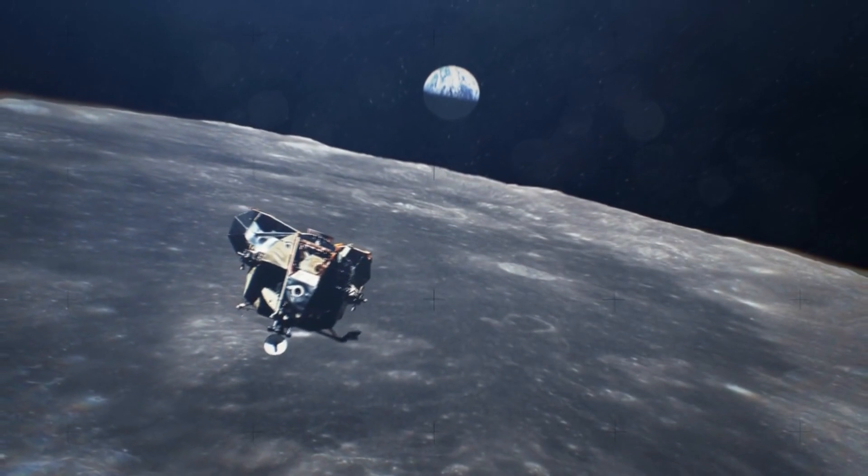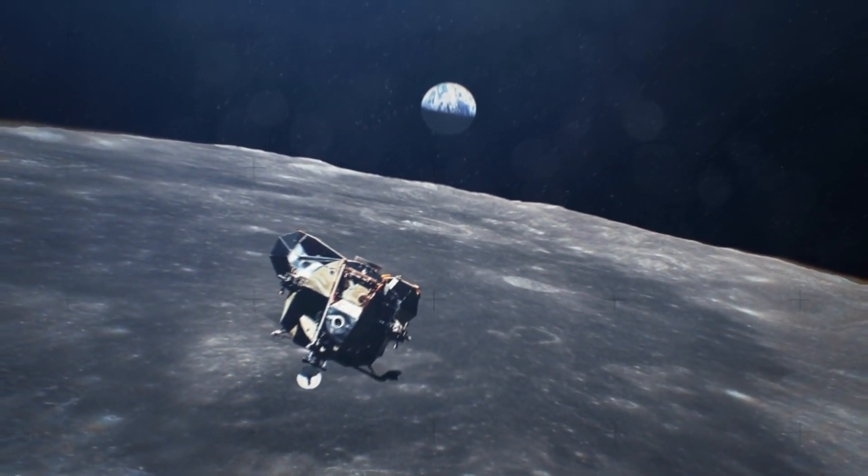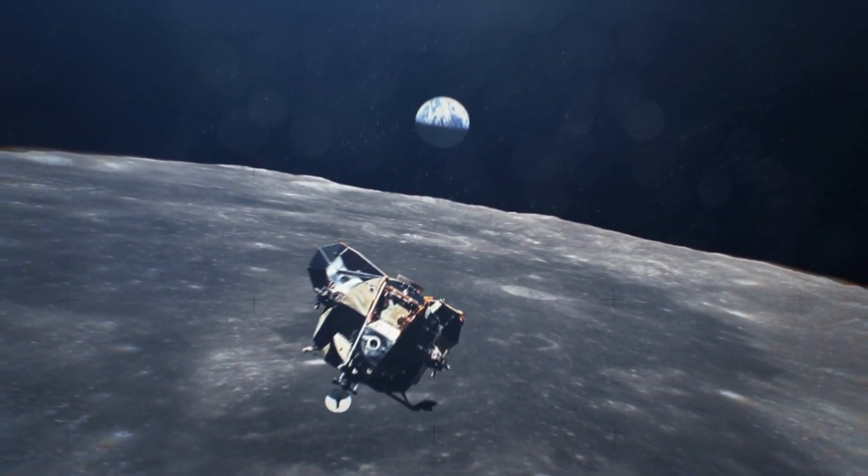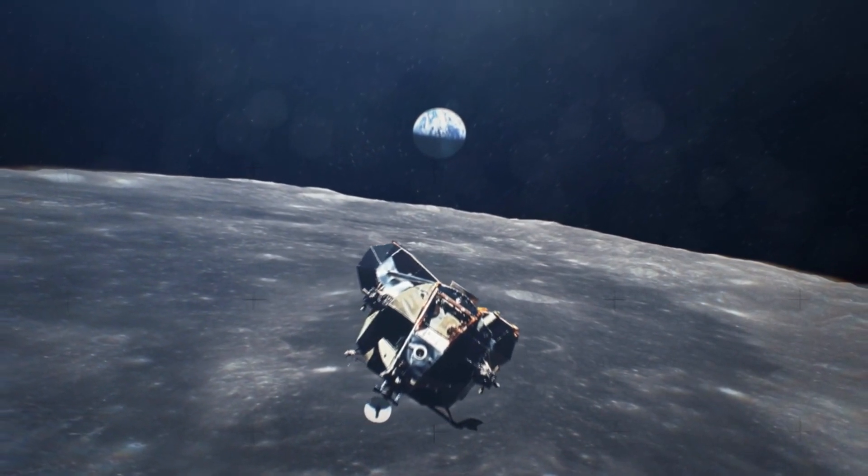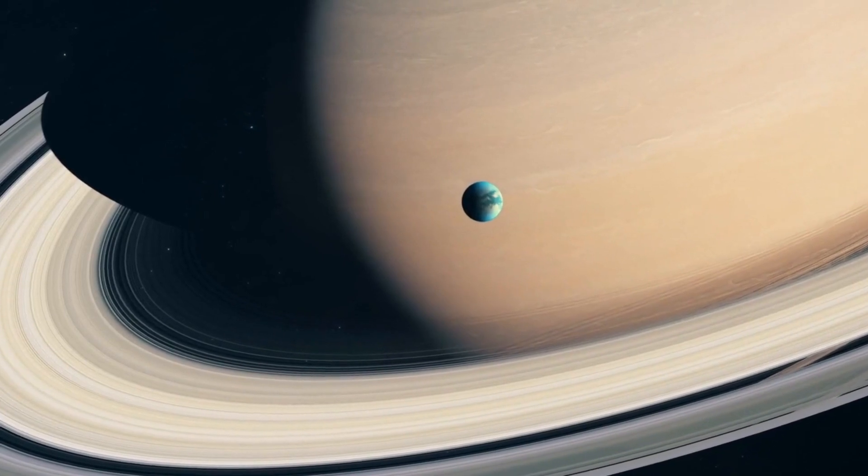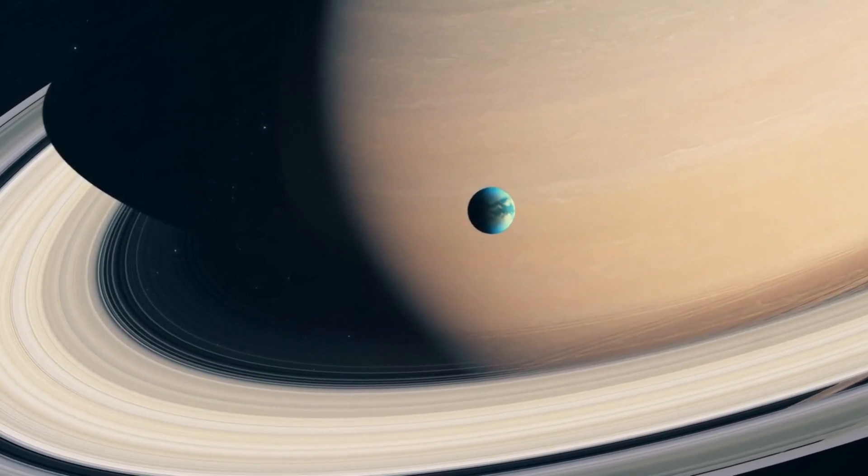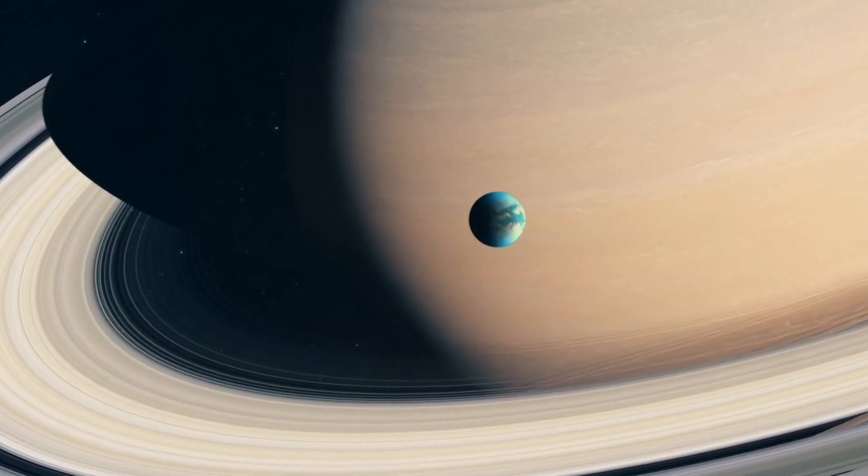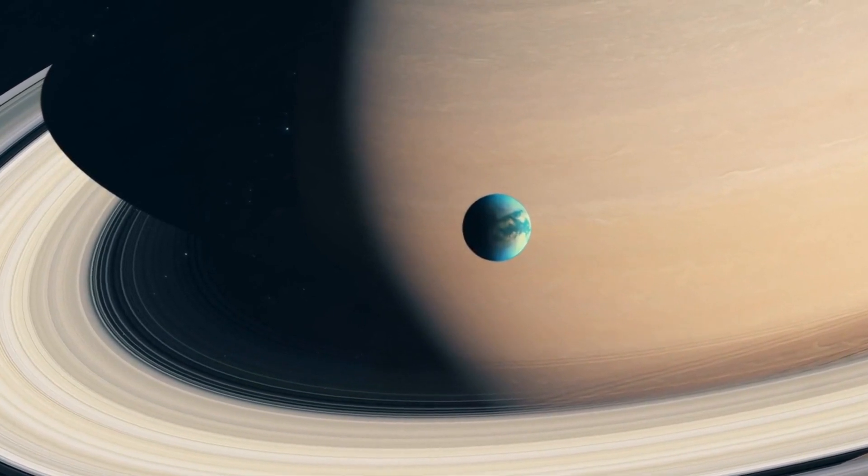Jupiter has 79 known moons, including Io, Europa, Callisto, and our solar system's biggest moon, Ganymede, which is even bigger than the planet Mercury. Saturn also has a similarly high number of moons, with the solar system's second-largest moon Titan roughly half the size of Earth's moon.